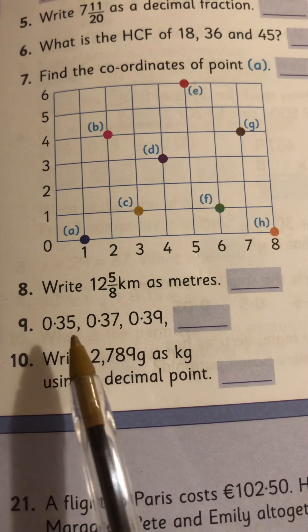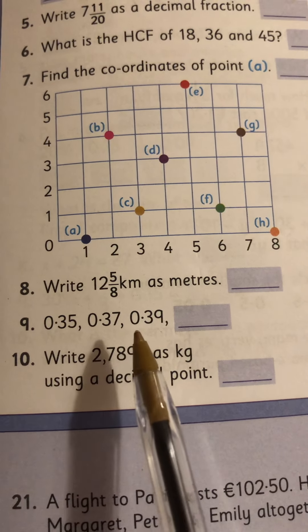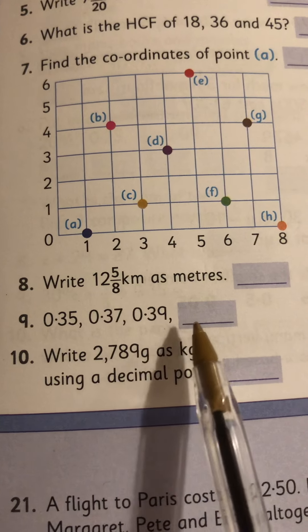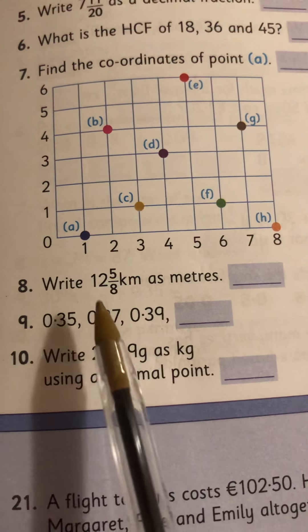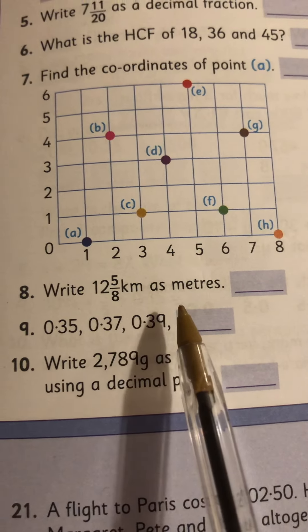Number 9, 0.35, 0.37, 0.39. What's next? You'll notice it's going up in 0.02.